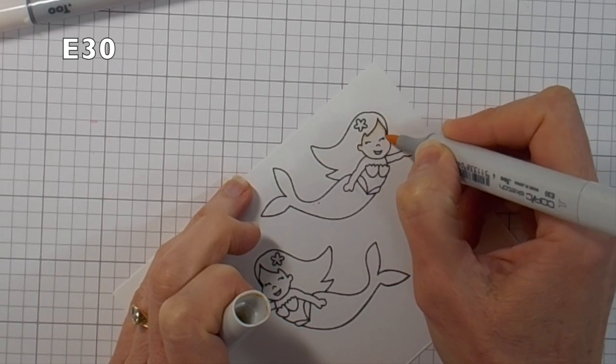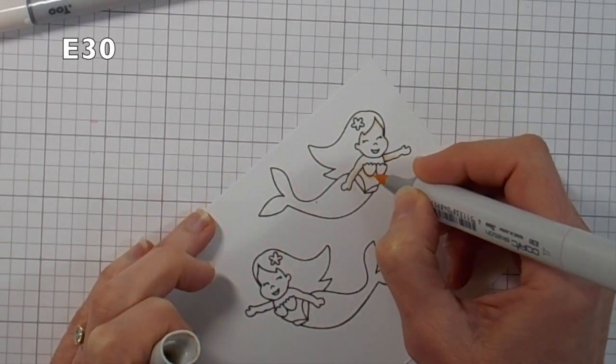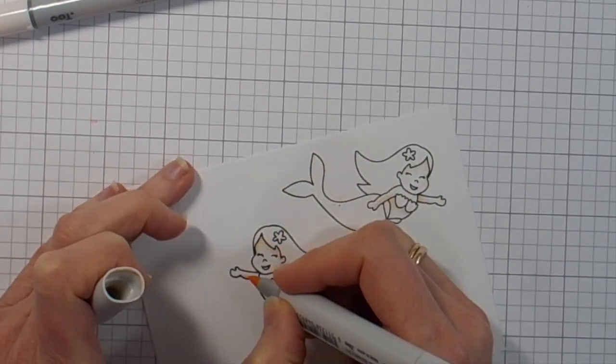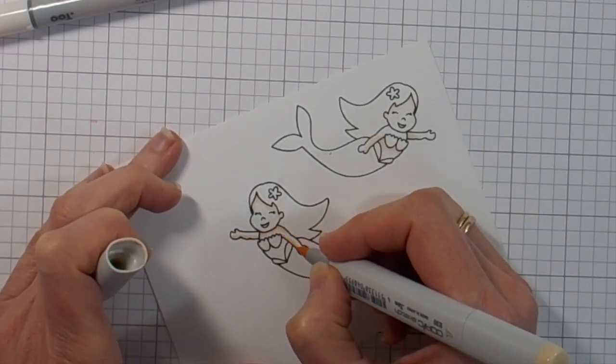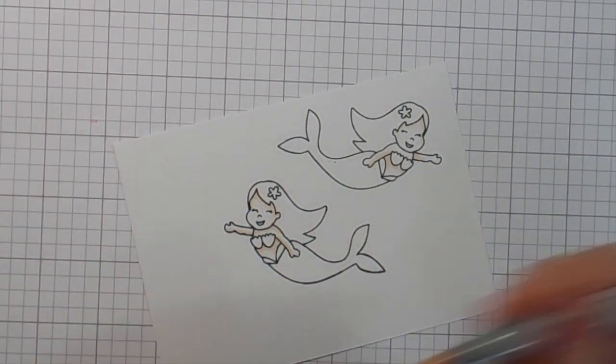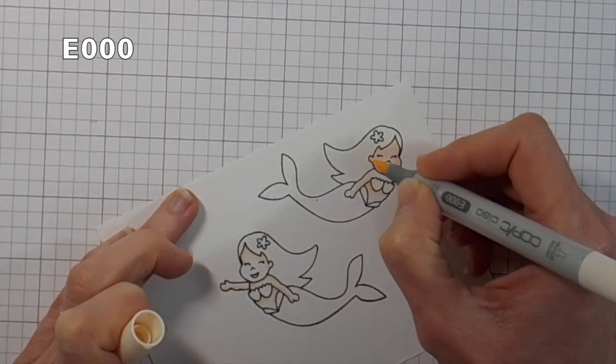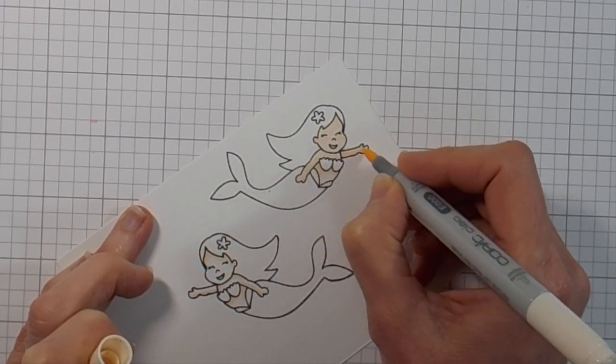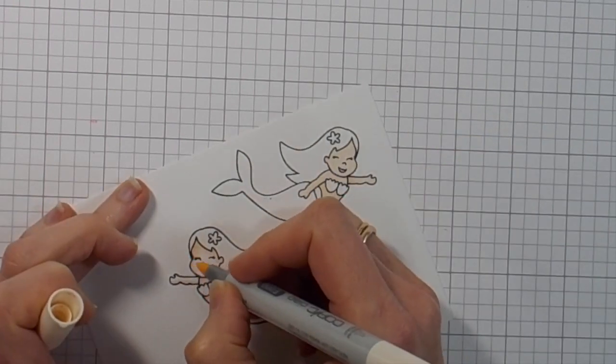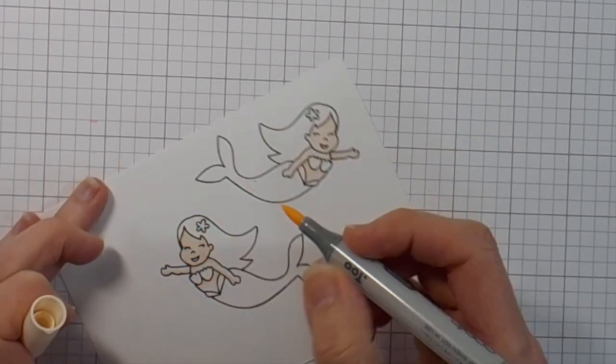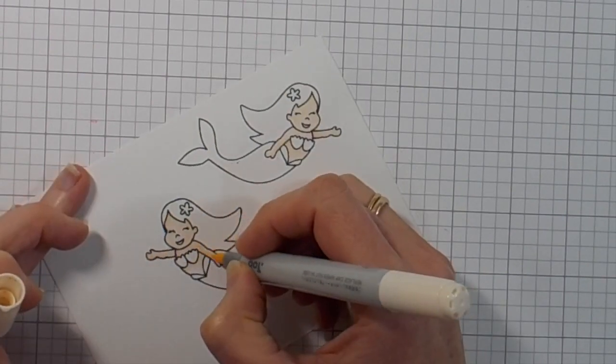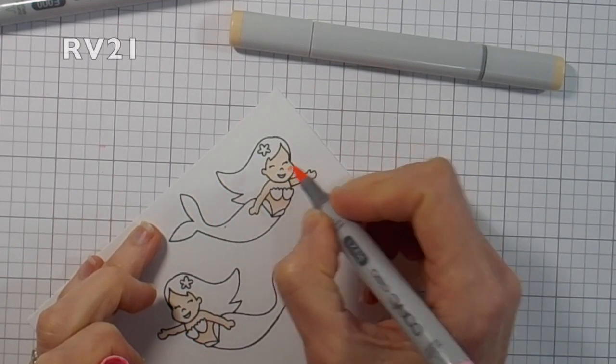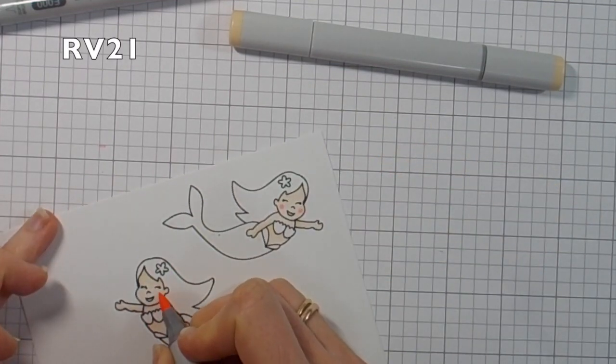Right, and now it's time for the Copic coloring. That's why I stamped my little mermaids in the Memento Tuxedo Black. So I list my Copic colors up above: this is E30 and then E000 for the skin of the mermaids, and I'm going fairly quickly through all this section. Then a little bit of pink for their cheeks.